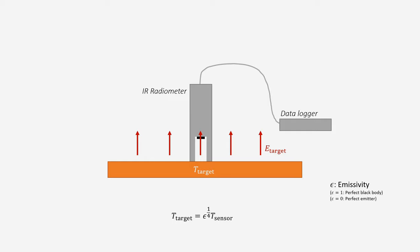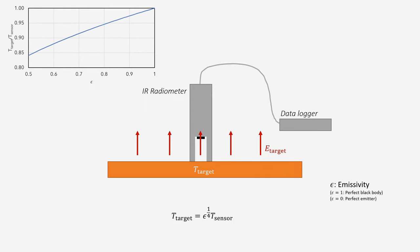While we still have the emissivity as part of the equation, when we raise it to the power of 1 over 4, it reduces the error in the measured temperature. We can see this in a plot of the ratio between the measured temperature and the true temperature, and how for emissivities more than 0.8, the error is less than 5%. Most emissivities of objects in the field are above 0.95, so the error is quite small.